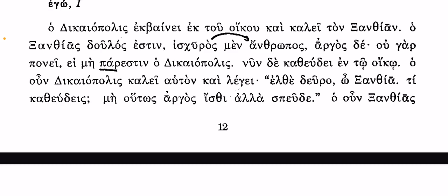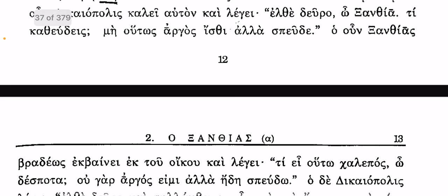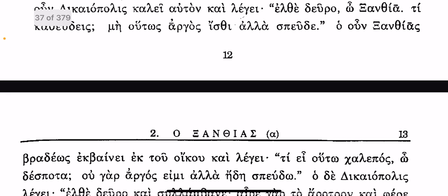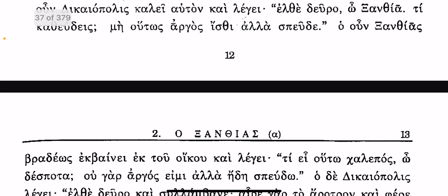So I'm going to do the last two lines, beginning with the 'O' on the line above: 'O un Dikiopolis kalei afton ke legei, elthe deuro O Xanthia, ti katheudeis, mi outos argos isthi, alla speude.' And now we have a break as we go to the next page. We see 'O un Xanthias' — there's that 'therefore' again — and Xanthias is going to respond.